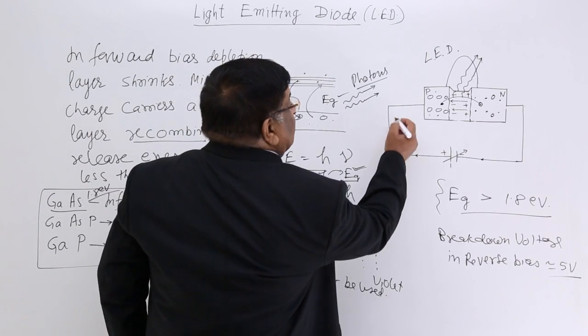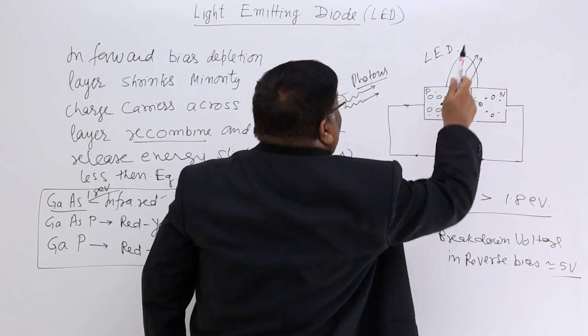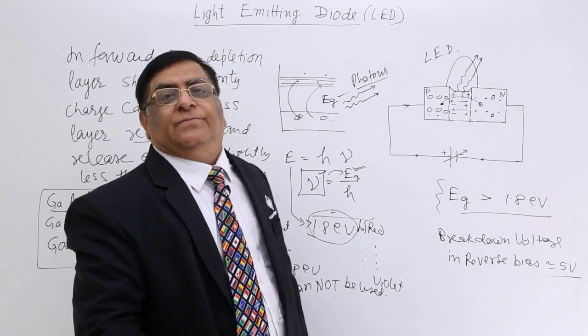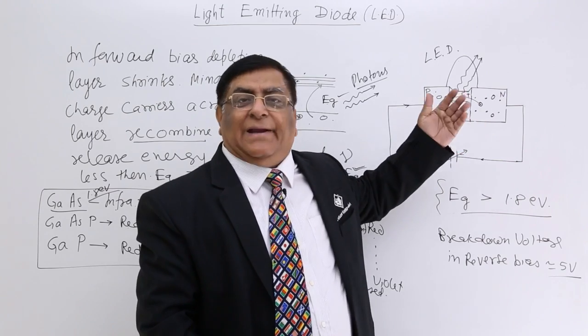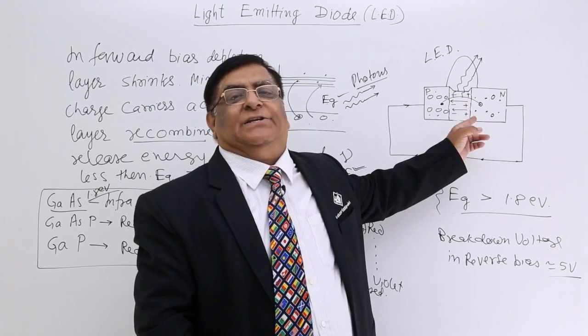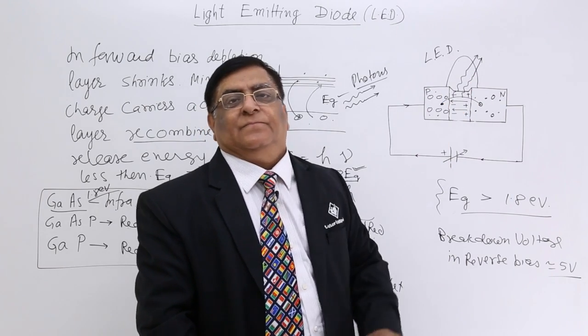So from here we see the current keeps on flowing and that energy we are getting on photons. So let's start with the recombination of minority, then majority, and recombination keeps on happening in this region.